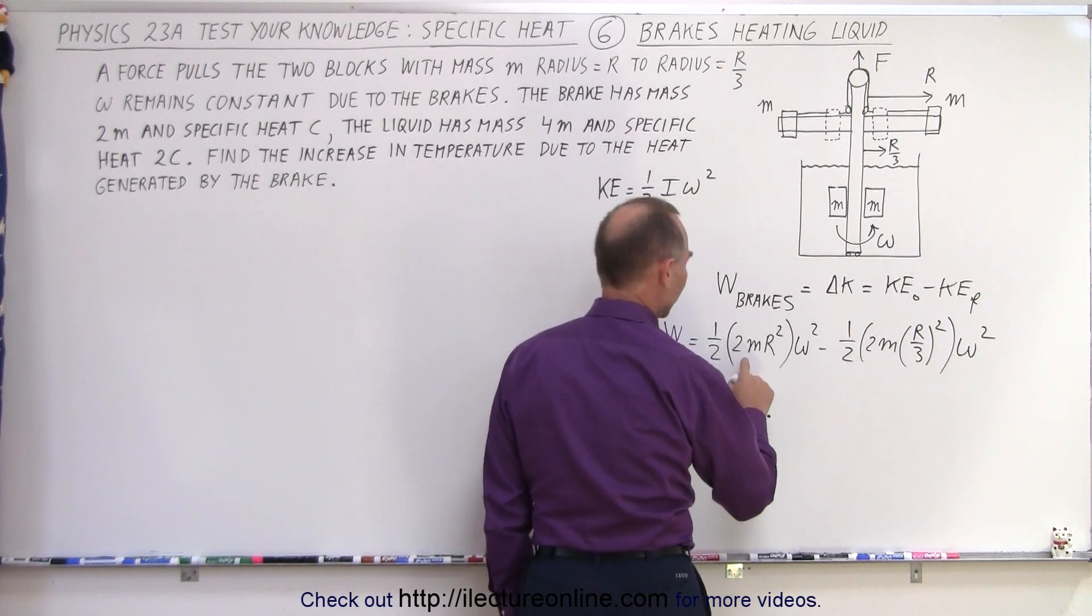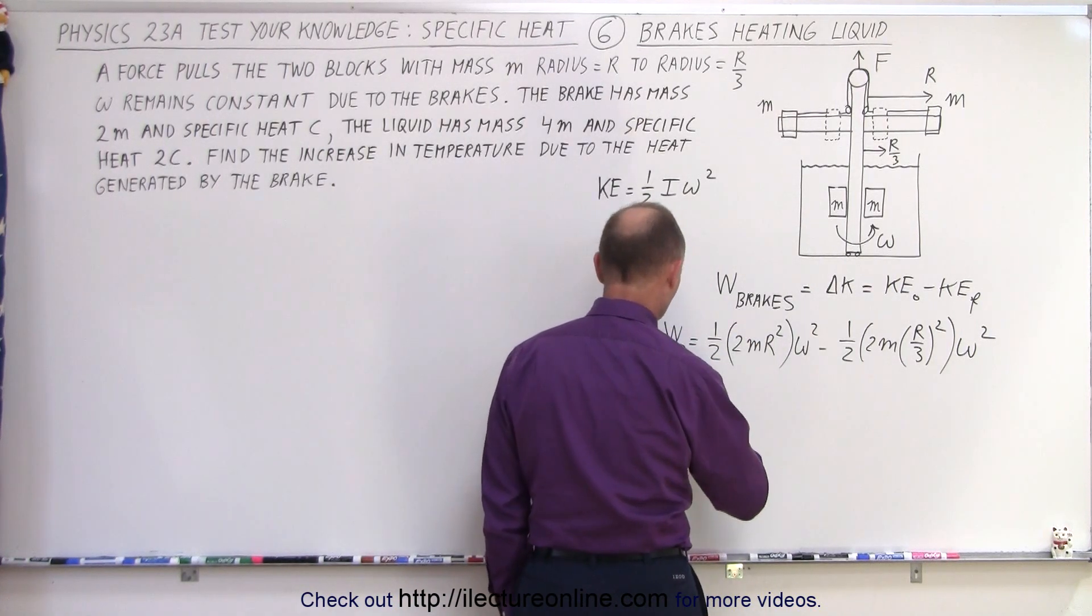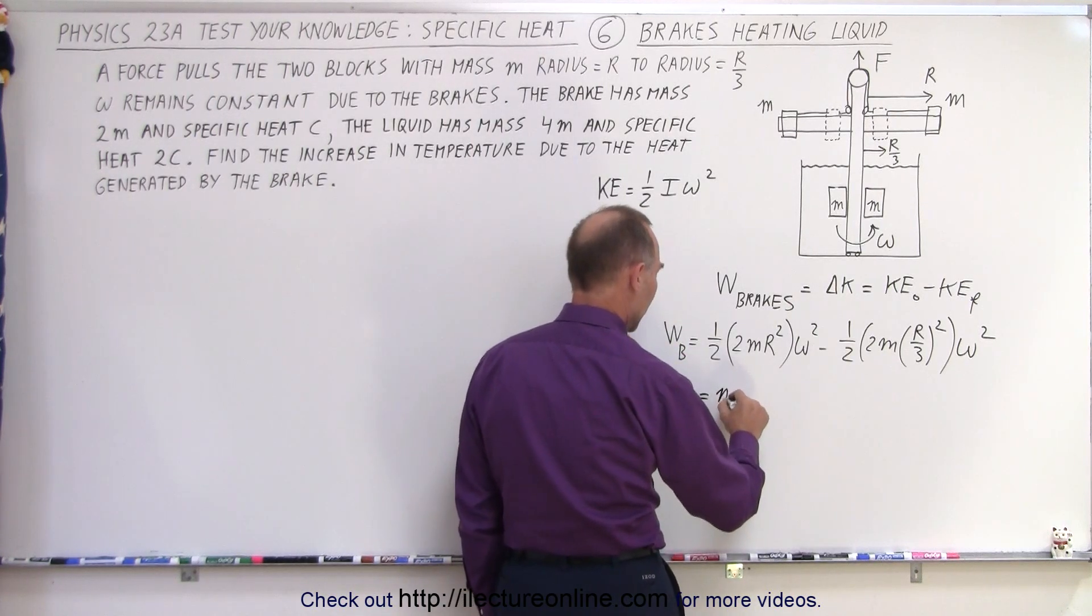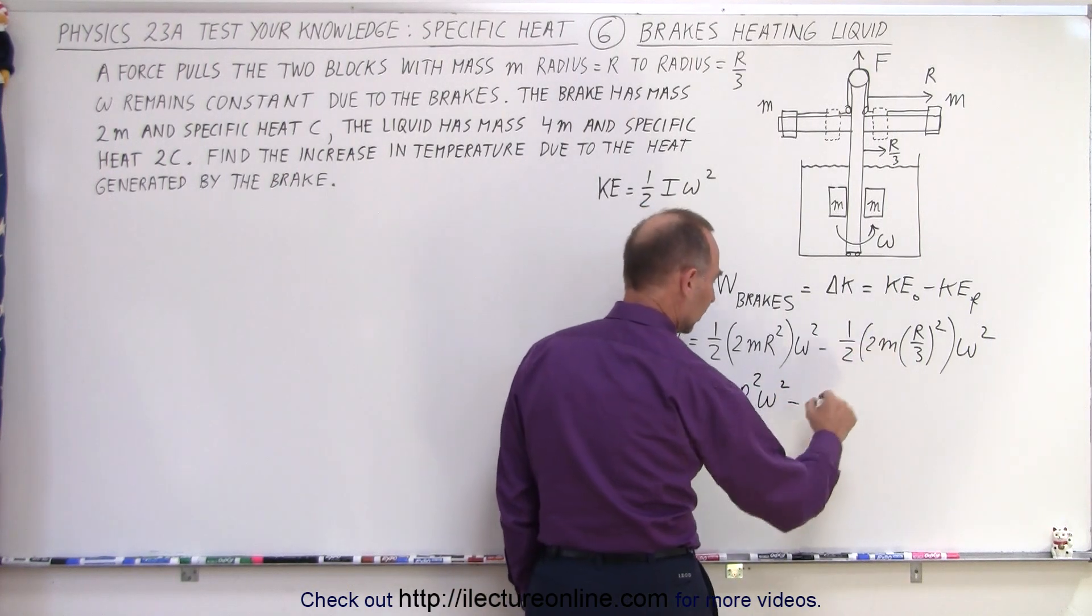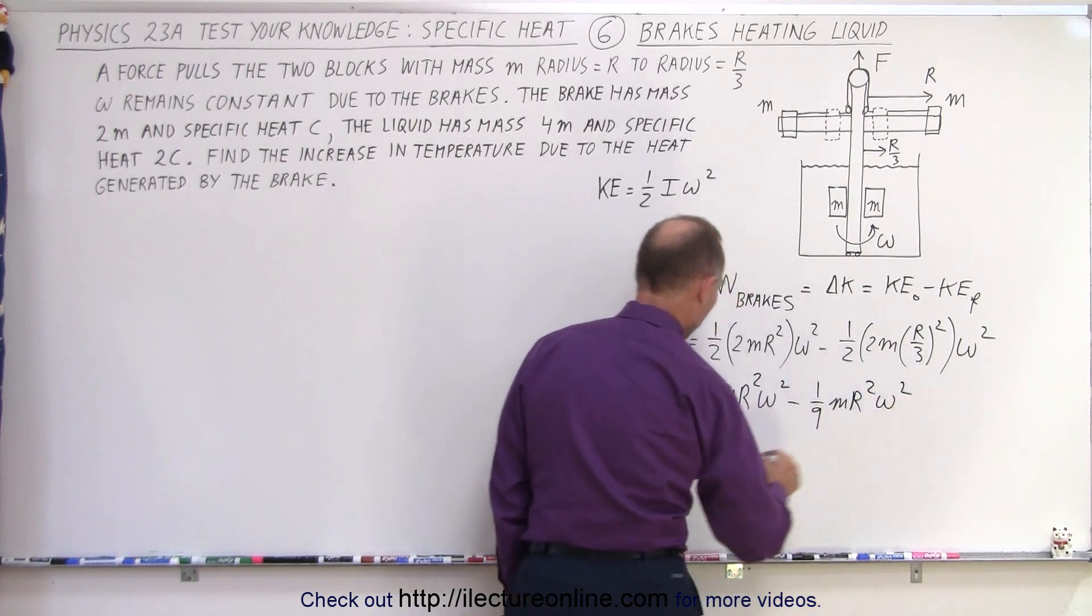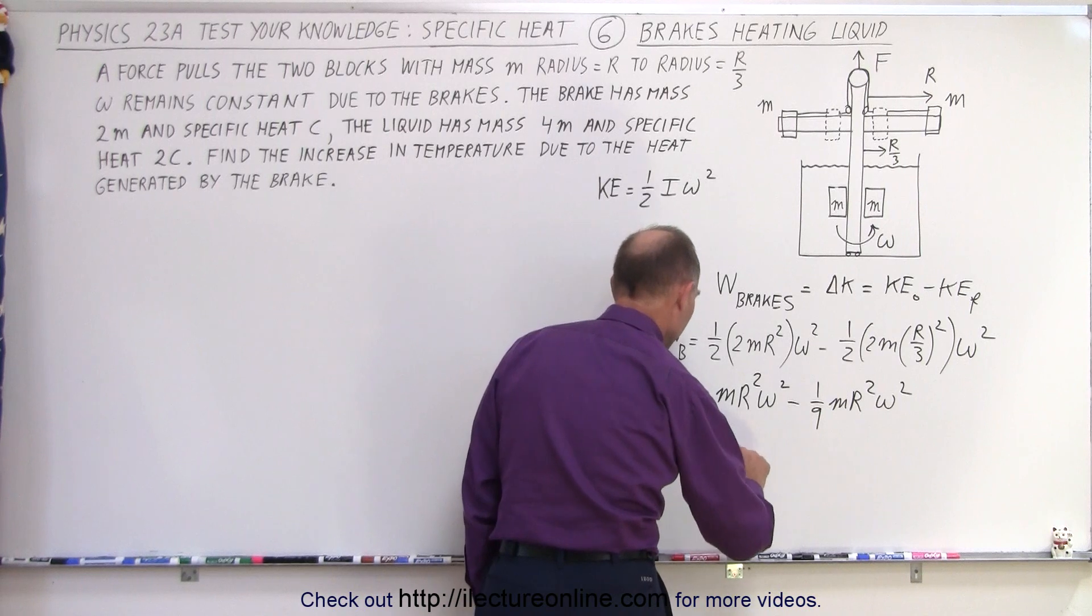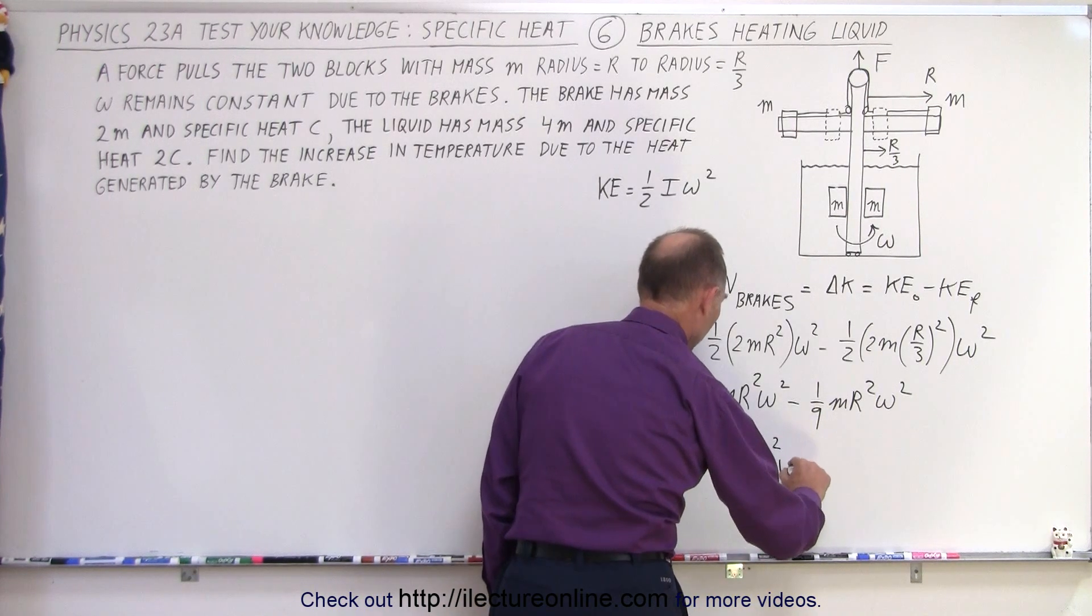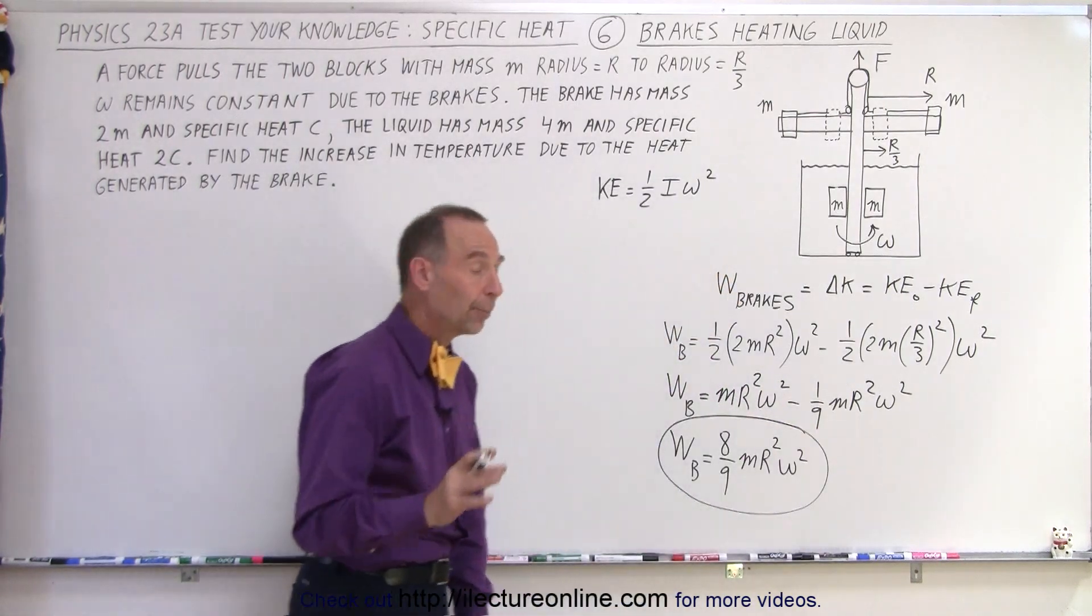Alright, so we have, well, let's simplify that. We have 1 half and 2, that cancels out, so we have the work done by the brakes is equal to MR squared omega squared, minus, that would be 1 ninth, MR squared omega squared. In other words, the work done by the brakes, which is the difference in kinetic energy, would be 8 ninths MR squared omega squared. So now we have the amount of work done by the brakes, which equals the heat added to the brakes and to the liquid.